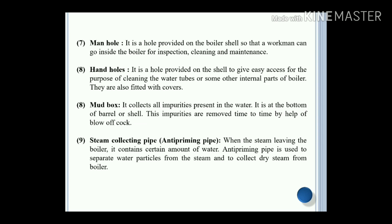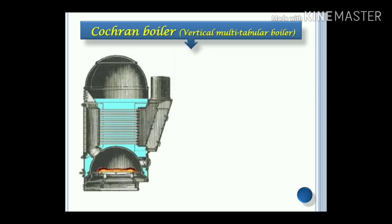Steam collecting pipe or anti-priming pipe: when the steam leaves the boiler, it contains a certain amount of water. So the anti-priming pipe is used to separate water particles from the steam and to collect dry steam from the boiler, which is very important.